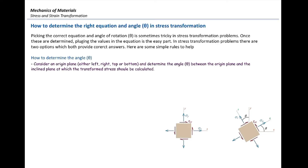In order to find theta, we need to consider one origin plane. That origin plane could be on the left or right, or on the top or bottom. Then we need to determine how much we need to rotate from the origin plane to the inclined plane in order to get that stress. Based on that, we can determine how much theta is.